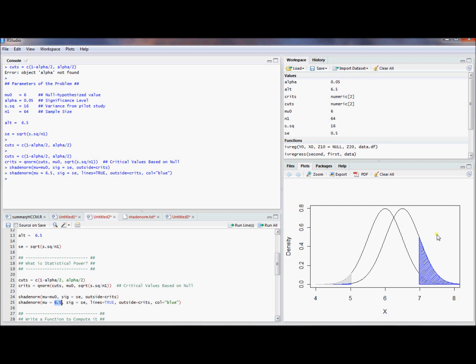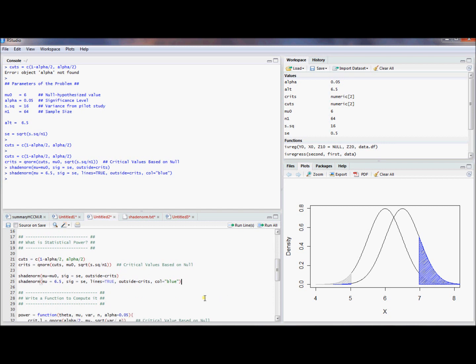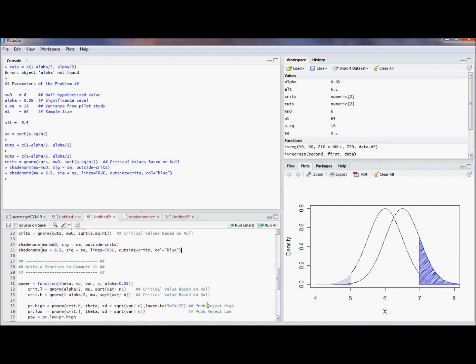But you can see that this power isn't so hard to compute. So maybe we could automate this and get a function that will actually compute this. And so I actually took the liberty of writing a function that will compute power. And then we can use this to actually plot the power function for certain sample sizes. So what my function does is it takes a vector of values at which I want to compute power. This is the mean under the null hypothesis.